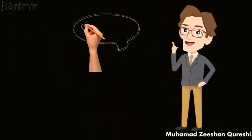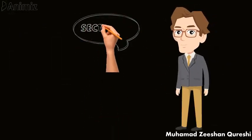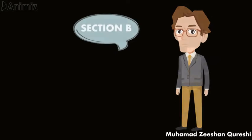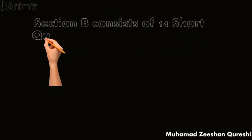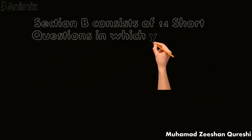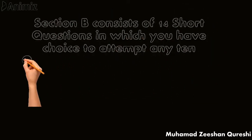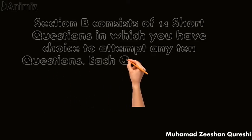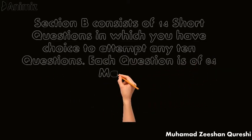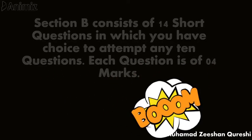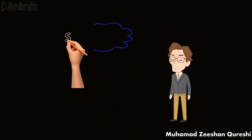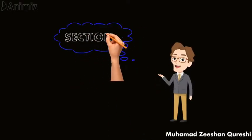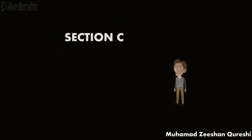Now what about Section B? Section B consists of 14 short questions, in which you have the choice to attempt any 9 questions. Each question is of 4 marks.